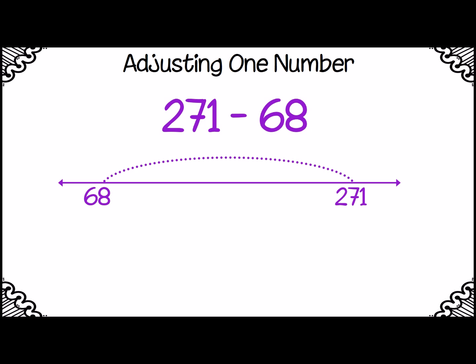In order to avoid regrouping, I can adjust one number to a friendly number. The number 68 is close to the friendly number 70. I'll add 2, making it 70 and eliminating the need to regroup. Now, I can easily subtract 271 minus 70. That's 201.